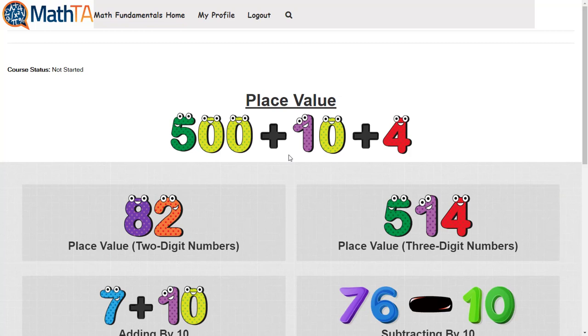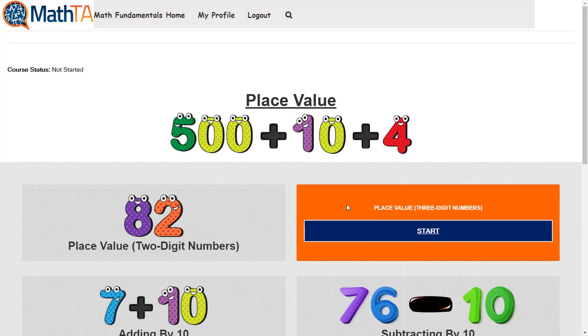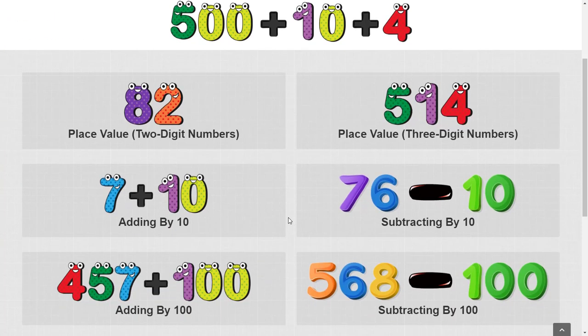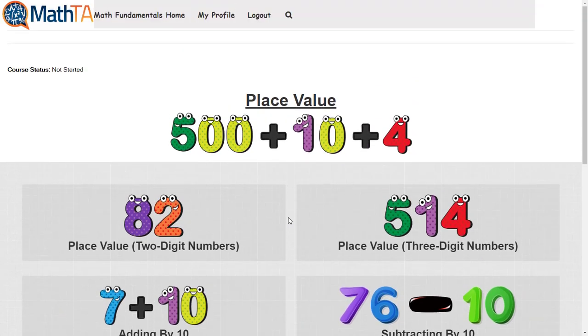And now we see there are several different topics. Each topic has an illustration with the name listed underneath. So let's start with place value and two digit numbers.